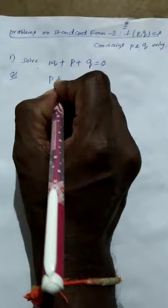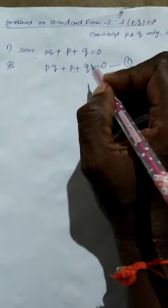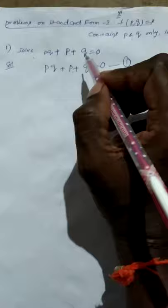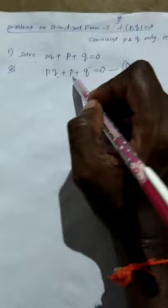Write the given PDE: pq + p + q = 0, taken as equation 1. First of all, we check whether this is linear or non-linear. For a linear PDE, the degree of p and q must be 1 and the product of p and q does not appear. But in the given problem, the product of p and q appears. Hence it is not linear — that means it is non-linear.